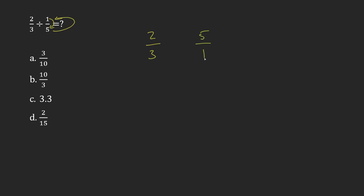So five on the top, one on the bottom. And then instead of division, you're multiplying. So you invert the second fraction, and you multiply.